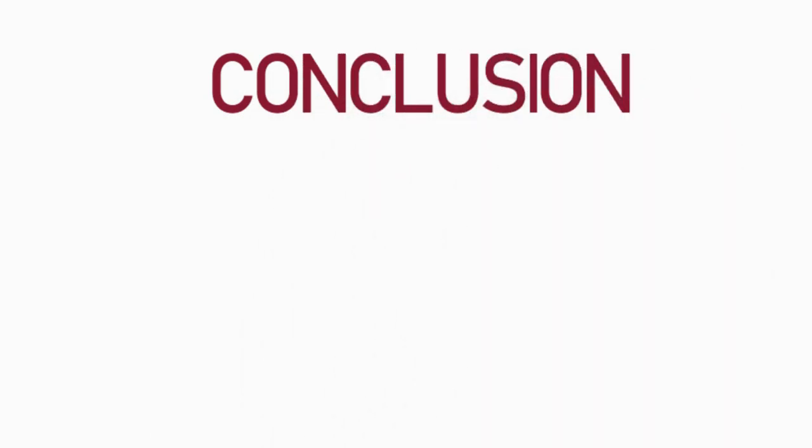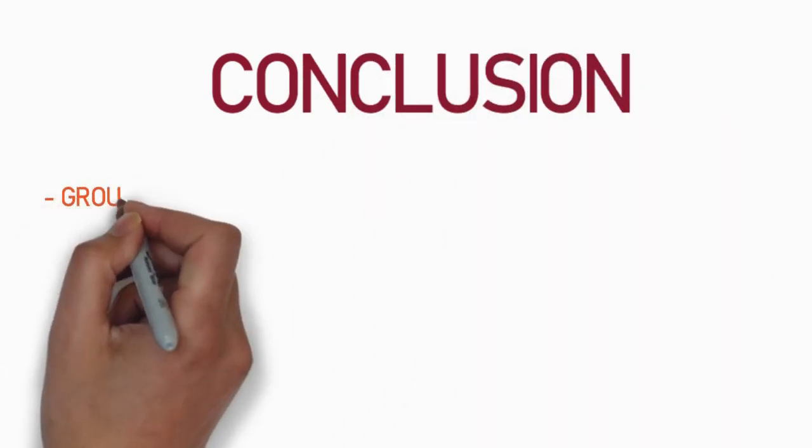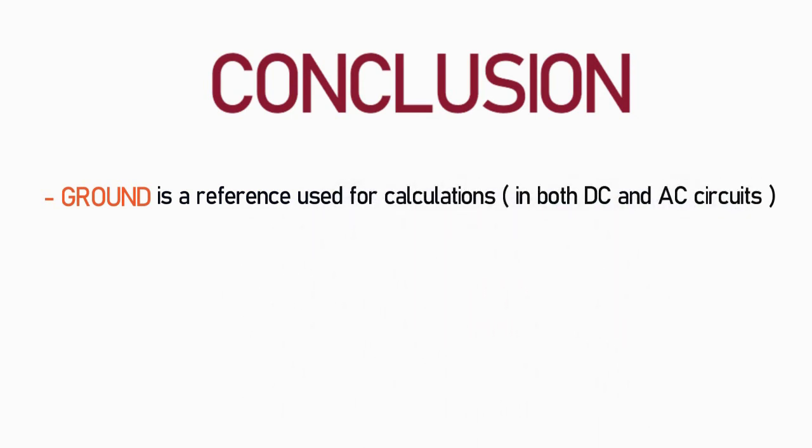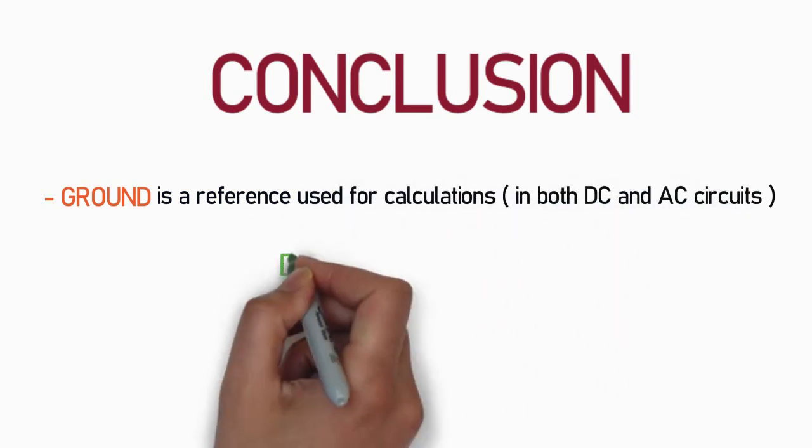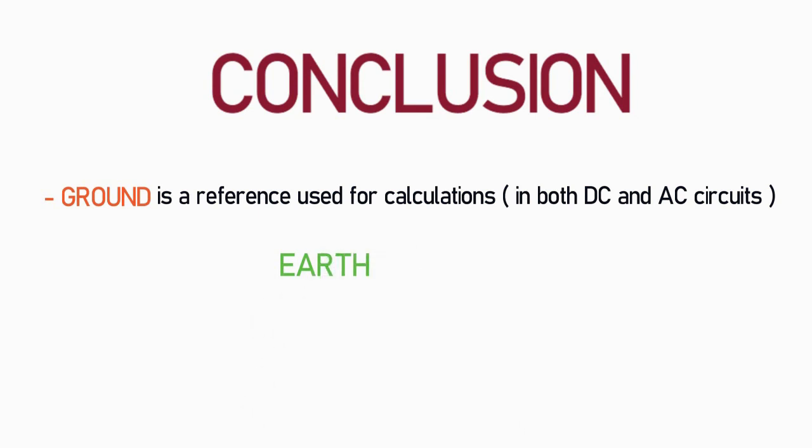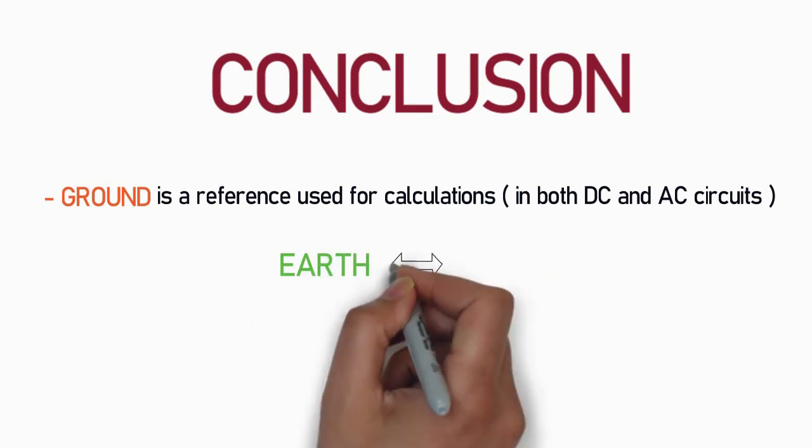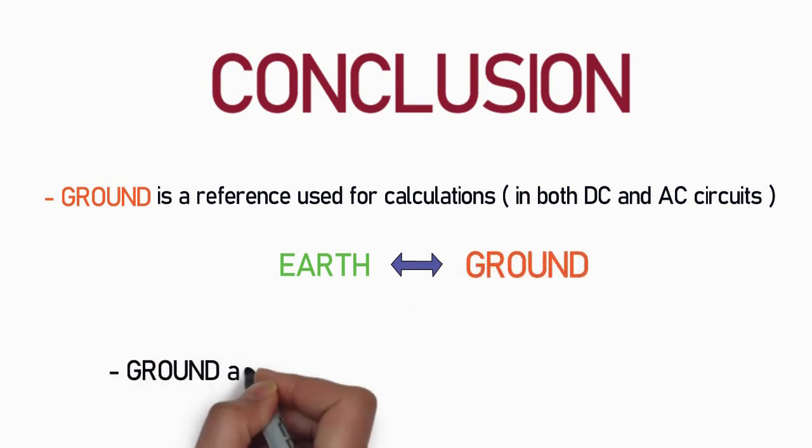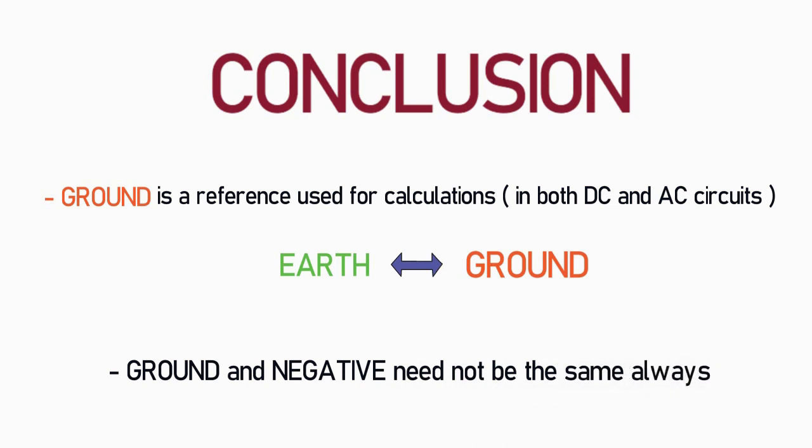Now we are at the conclusion part. The term ground is used for a reference point for calculations. So theoretically you can place ground anywhere on your circuit. But the concept of neutral and earthing in high voltage AC circuits is not for calculations and since earth is used as a reference point here we may refer to earth as ground itself.